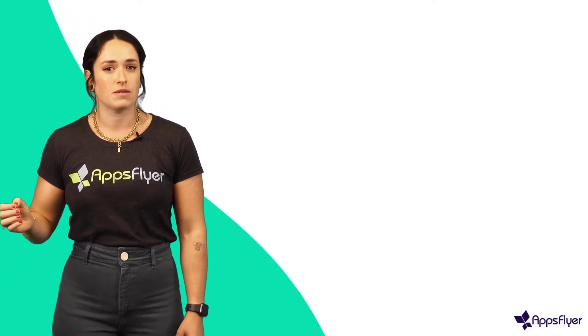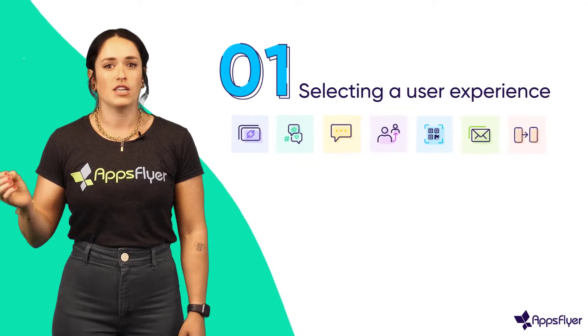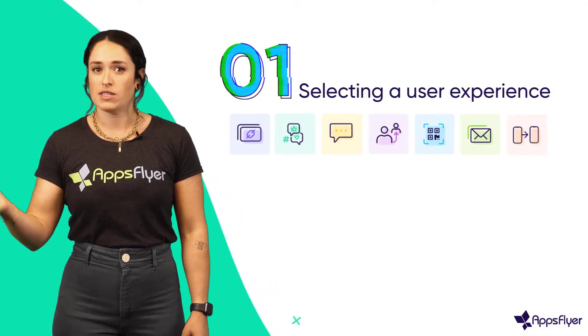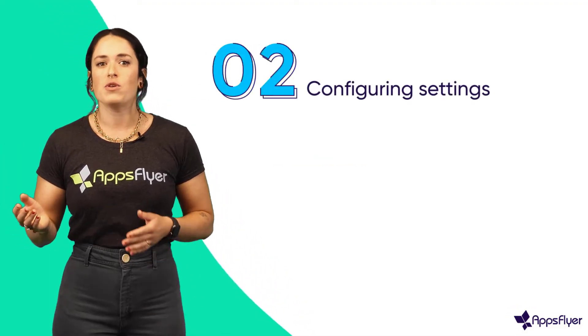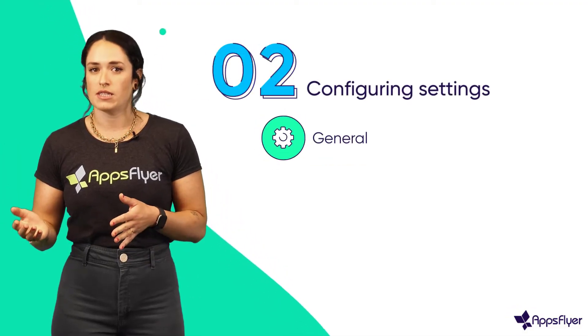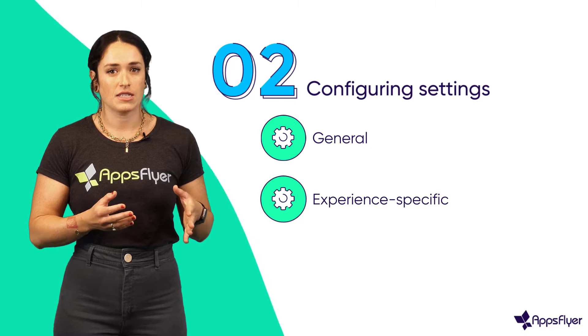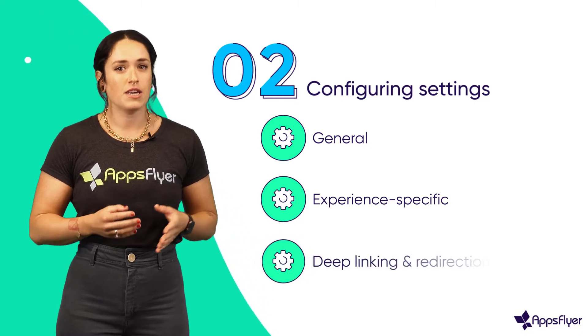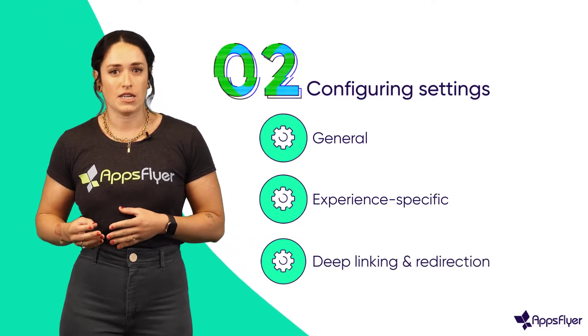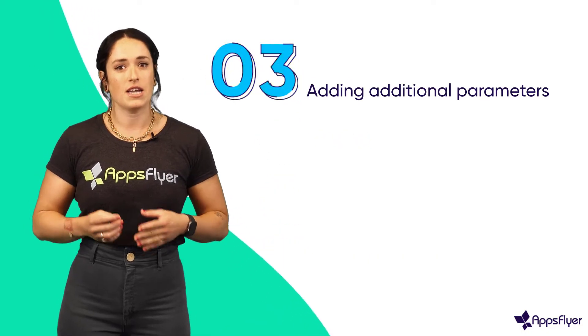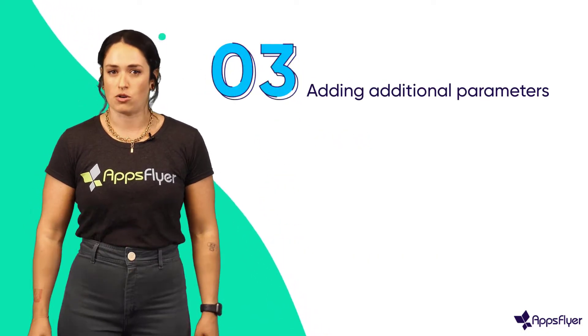Creating a link contains several main steps: selecting a user experience, configuring general settings, experience-specific settings, deep linking and redirection settings, and adding additional parameters.